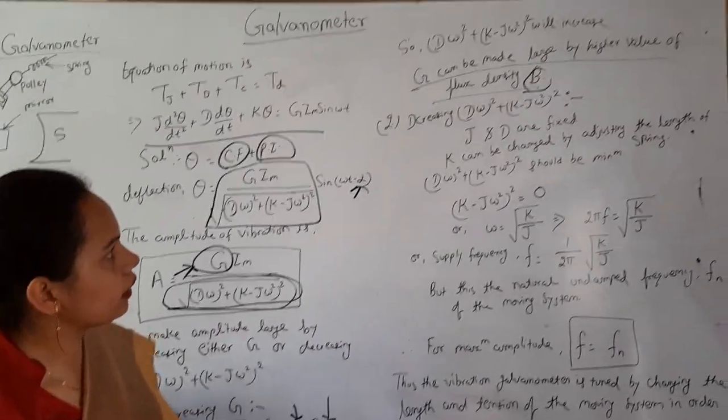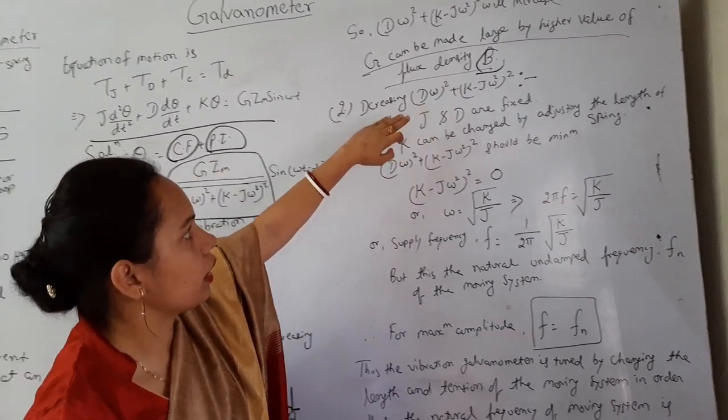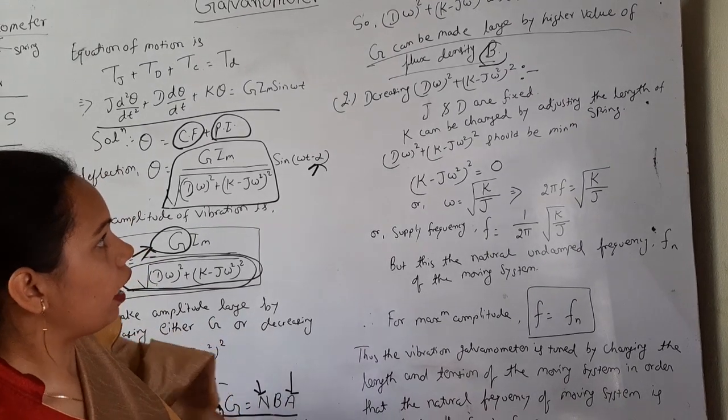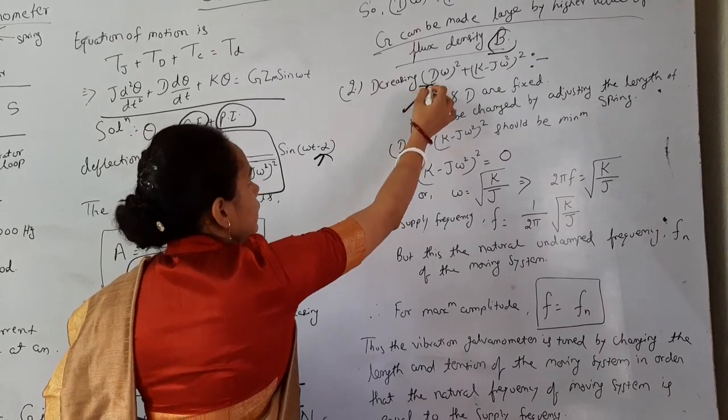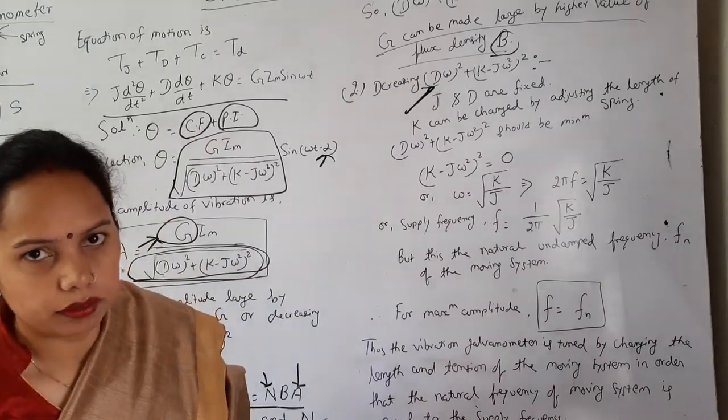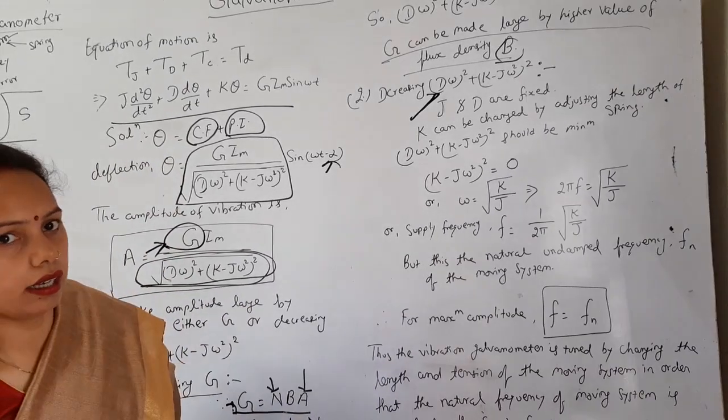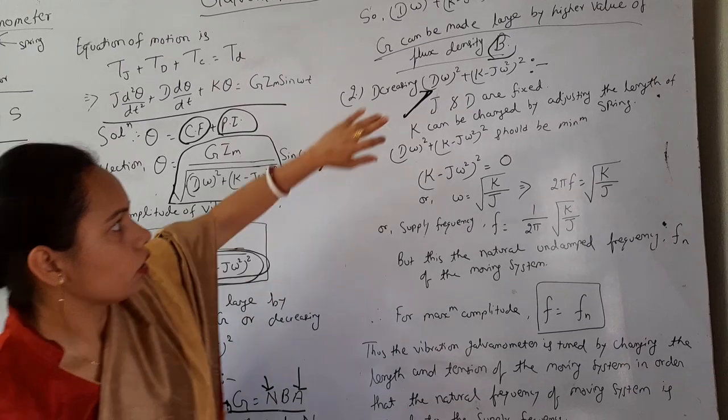Now second condition is that we should have to decrease the value (Dω)² + (K - Jω²)². Then how can it be decreased? As we know that damping constant is constant because it is constructed how much mass is there and according to that it will vibrate. That should be constant.